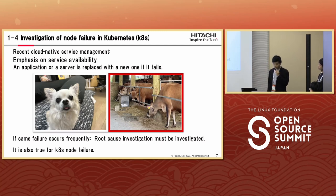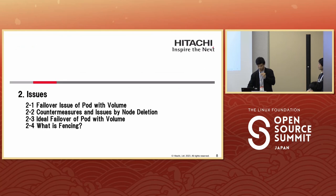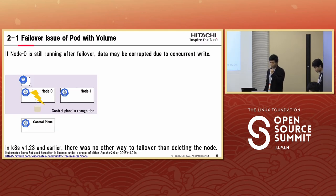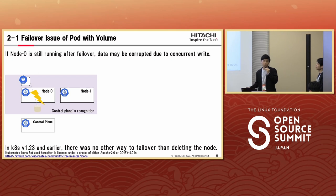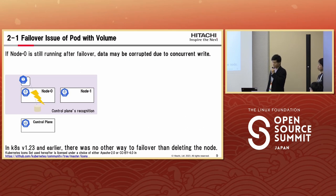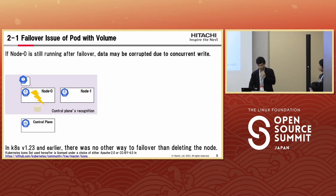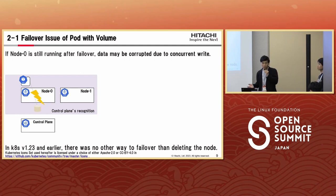There are issues with failover that are an obstacle for investigating the causes. I will explain the failover issue for pods with volumes. First of all, failover is a function to switch to a backup system when an application or server fails. It helps to improve availability and reliability. In Kubernetes, pods are also automatically failed over. However, we need to be careful when the pod is stateful, especially when the pod has volumes whose data may be corrupted due to concurrent writes.